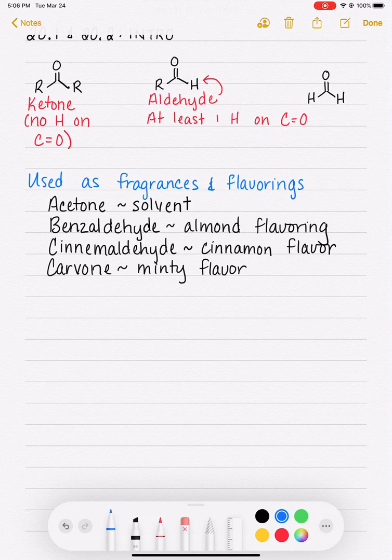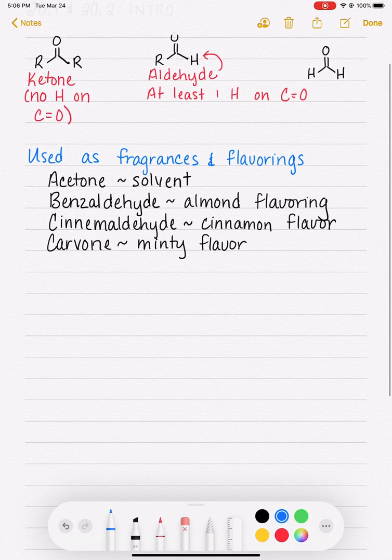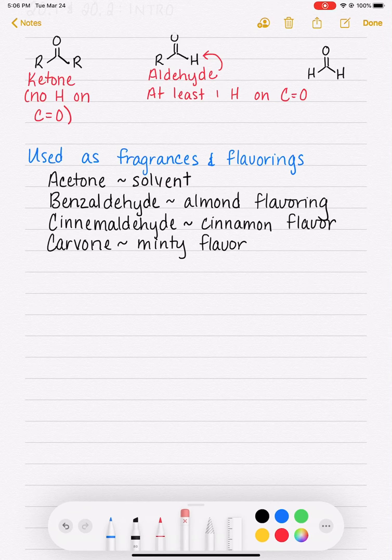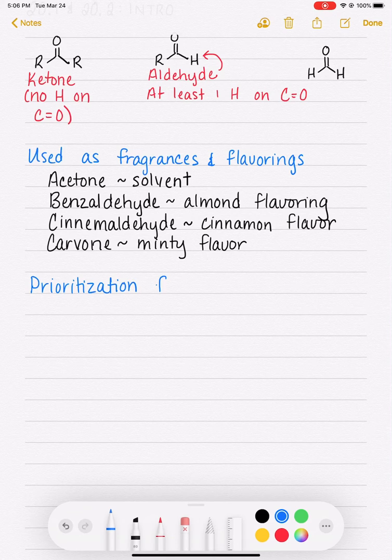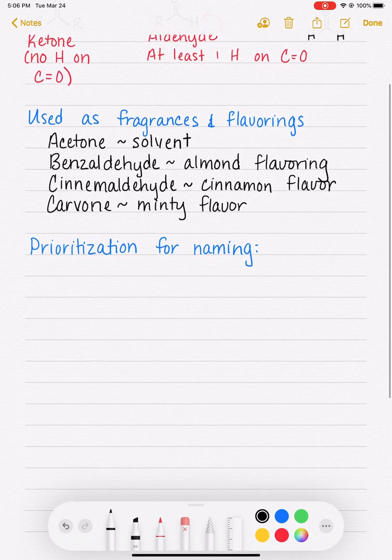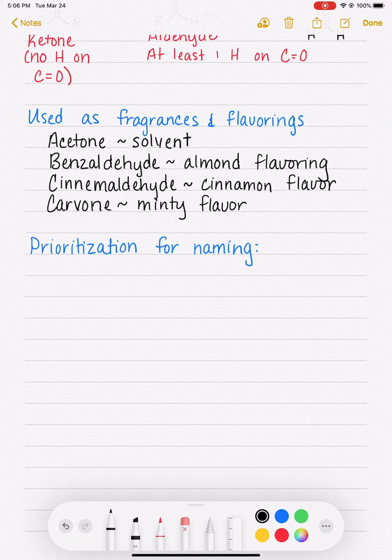We're going to get into naming aldehydes and ketones. Before we get into naming aldehydes and ketones, I want to write down prioritization of functional groups for naming, because now that you know quite a bit of IUPAC naming, we're going to come across more and more examples of molecules that have multiple functional groups in them. And remember, if you have a molecule that has two or more functional groups in it, you have to decide which functional group is high priority and name the molecule according to its high priority functional group. So based on just on the functional groups that we currently know how to name, the highest priority functional group is the aldehyde.